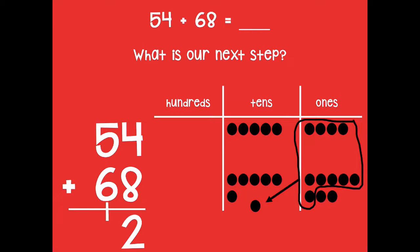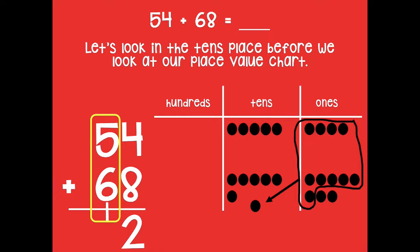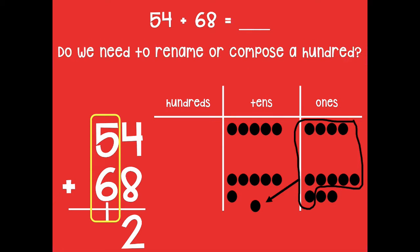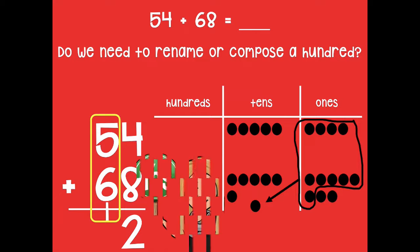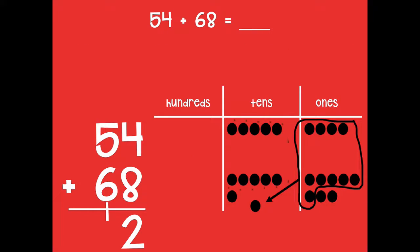Our next step is to go to the tens place. Looking at the vertical form, do we need to rename or compose a hundred? Yes, because we're going to have more than ten tens. Here are my ten tens — I'm going to compose them into a hundred, so now I'm left with two tens and one hundred.